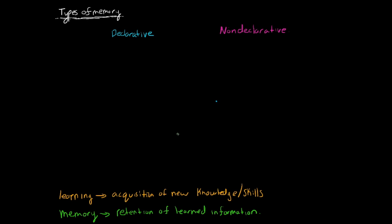First of all, down here I've written the definition of learning versus the definition of memory, because sometimes they can get a little bit intertwined and confused. Learning is the acquisition of new knowledge or skills. Learning is the actual acquisition, the process of gaining these new knowledge, new skills, and learning new things. When you're studying, that is learning.